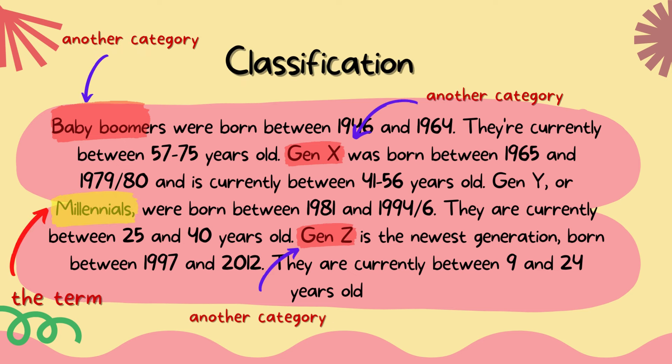We can also put the term being defined in a category — we call it classification. Classification shows how the topic or term fits into a larger category. For example, baby boomers were born between 1946 and 1964 and are currently between 57 to 75 years old. Gen X was born between 1965 and 1979 and is currently between 41 to 56 years old. Gen Y or Millennials were born between 1981 and 1994 and are currently between 25 and 40 years old. Gen Z is the newest generation, born between 1997 and 2012, and is currently between 9 and 24 years old.